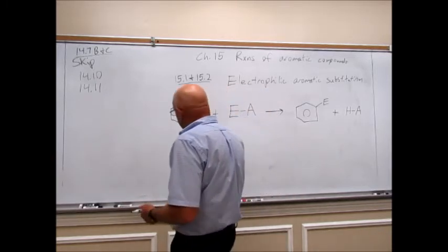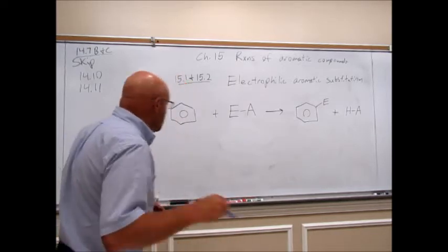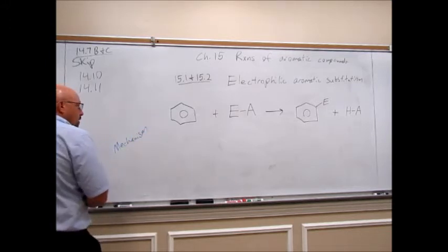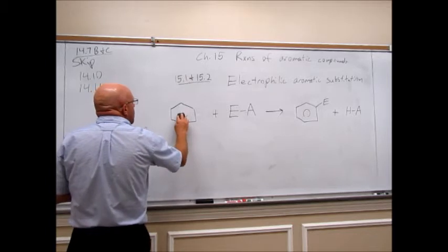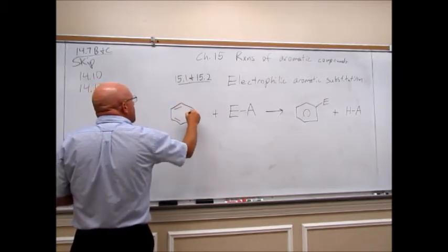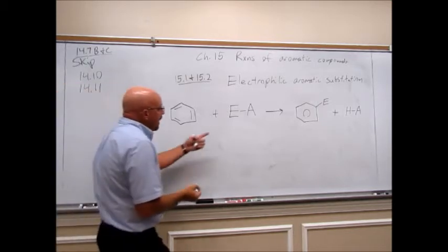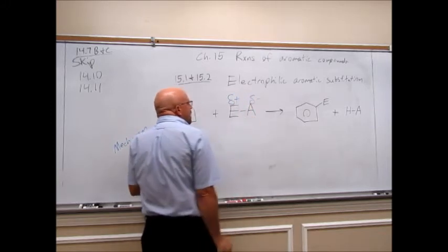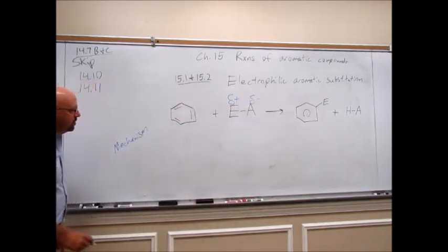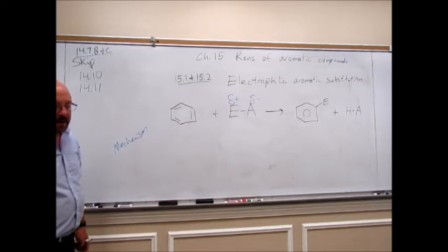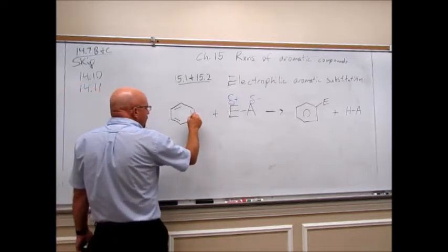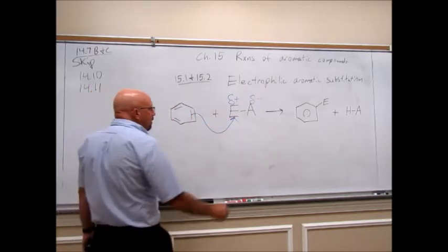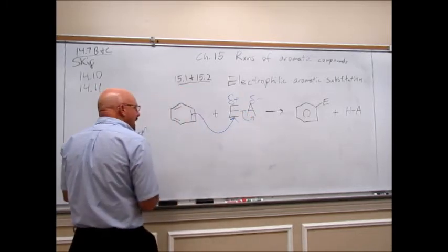Now let's take a look at the mechanism for how this works. I'm going to stay generic and also do specific examples. The electrophile has a full plus charge or a large partial positive. Our first step of the mechanism: we're going to take a pair of electrons out of one of the double bonds of the aromatic ring, come and grab the electrophile, and kick the anion off.